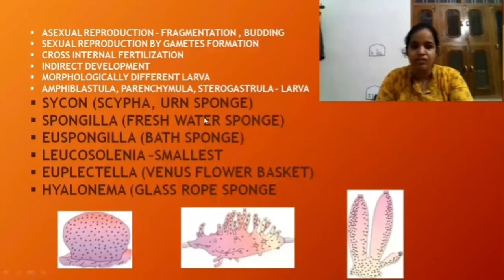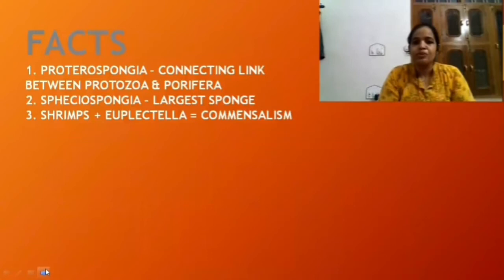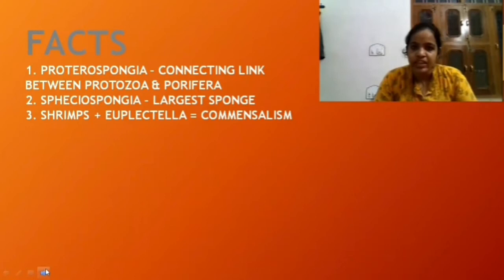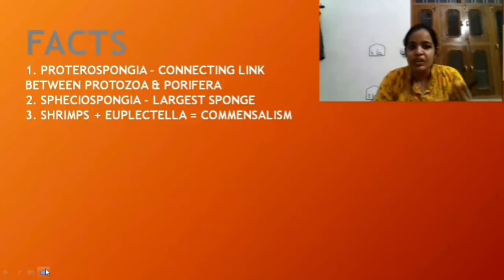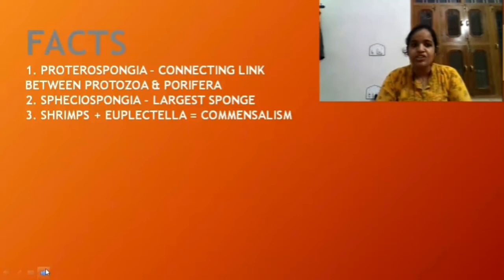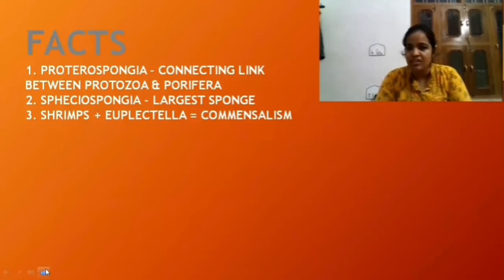Some more facts about Porifera: Proterospongia is actually the connecting link between Protozoa and Porifera. Spongia is the largest Porifera member. The shrimps have a commensalism relationship with Euplectella, where one is benefited and the other neither benefits nor is harmed. This is all about the Porifera.